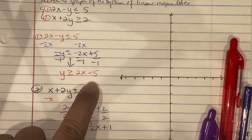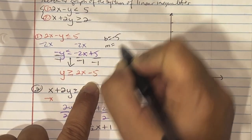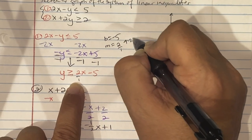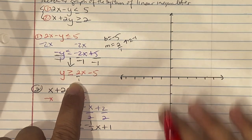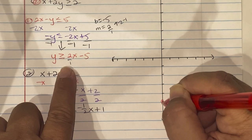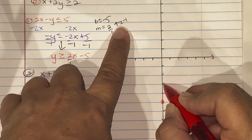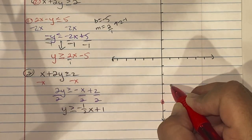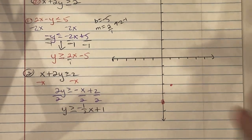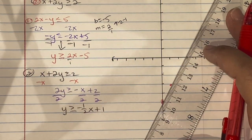For the first graph, the y-intercept b is negative 5, and the slope is 2 over 1. Put a dot at negative 5 on the y-axis, then go up 2 and right 1 to plot another point. Because it's a greater than or equal to inequality, the boundary is a solid line through those two points.